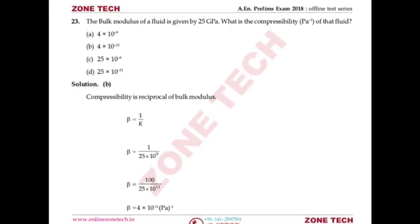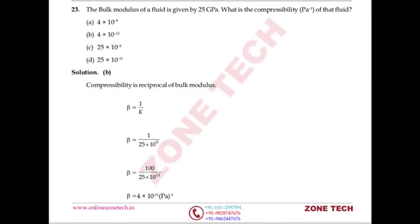Question number 23: Bulk modulus of fluid is 25 GPa. Find compressibility. Bulk modulus and compressibility are inversely related: β = 1/K. So β = 1/(25 × 10⁹) Pa. To match the answer format in units of 10⁻¹¹ Pa⁻¹: multiply numerator and denominator by 10², giving 4 × 10⁻¹¹ Pa⁻¹. Answer is B.